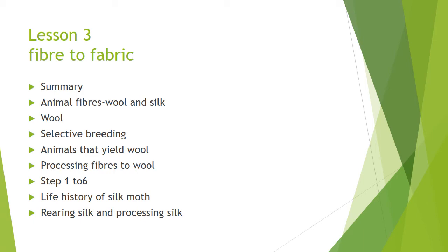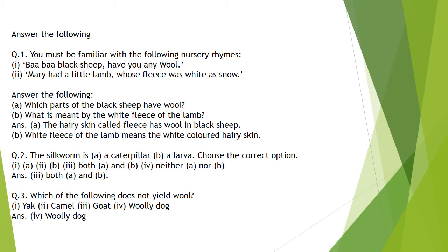Now let us see the next slide. Looking at question 1 on page 32 of your textbook — you must be familiar with the nursery rhymes: 'Baa baa black sheep, have you any wool?' and 'Mary had a little lamb whose fleece was white as snow.' The question asks: which parts of the black sheep have wool, and what is meant by the white fleece of the lamb? The answer is the hairy skin called fleece has wool in the black sheep, and white fleece of the lamb means white-colored hairy skin.